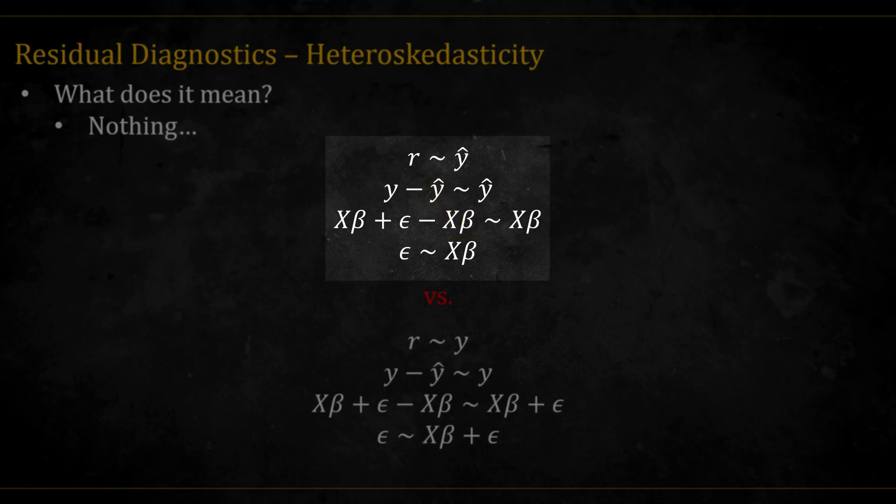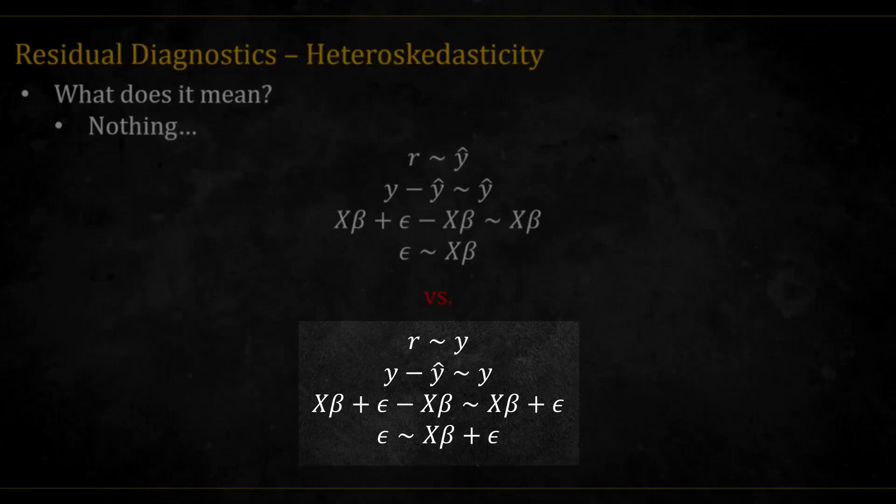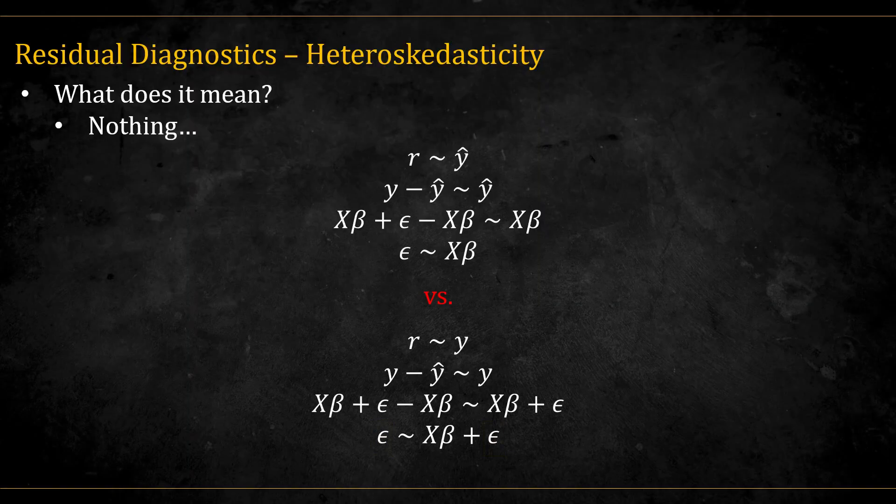In any case, we don't expect to see any pattern here. On the other hand, the bottom part shows what happens when plotting the residuals against the true y's. We get epsilons on both sides, and so we expect to see something that resembles a y equal x line.